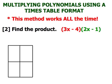Notice in this problem, we are taking two binomials and we're multiplying them together. So using a times table format, this is what I'm going to do. You take one of the binomials and you write 3x for the first term minus 4 is the second term.